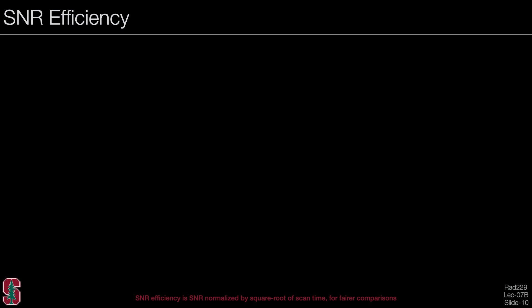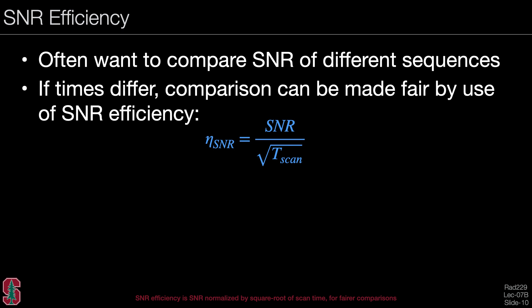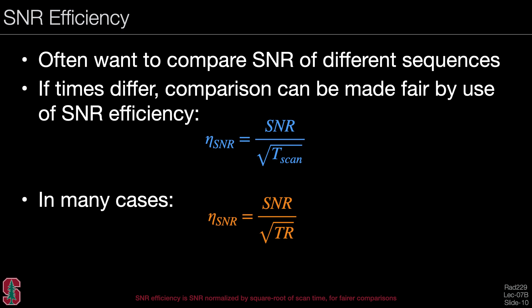Now let's talk about SNR efficiency. We often want to compare the SNR of different sequences that may have different parameters. If the scan times differ, we can normalize the comparison using SNR efficiency, defined as eta_SNR equals SNR divided by the square root of the total scan time. In many cases the total scan time is proportional to TR, so this efficiency can often be written as SNR divided by the square root of TR — though you should be careful applying this across different sequences.